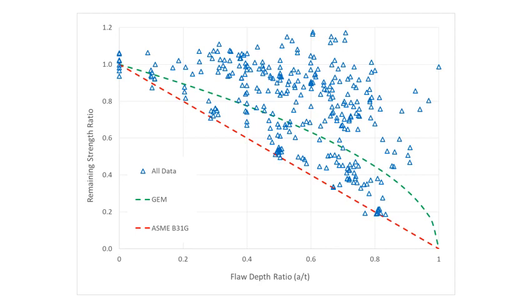You will notice that there are a lot of data points here between the red dashed line and the green dashed line, and it would appear on the surface that this disproves my theory. I'm sure a lot of you will draw that conclusion, and I completely understand that. However, I'd like to show you something that comes out of this data that I find to be extremely interesting.